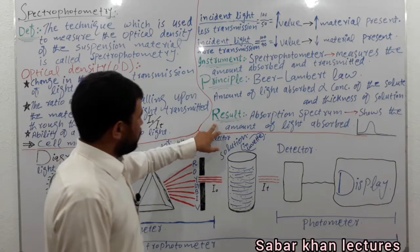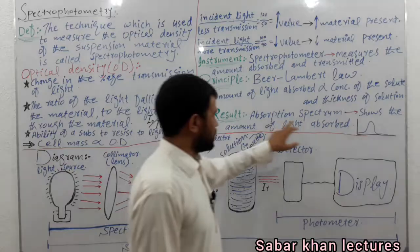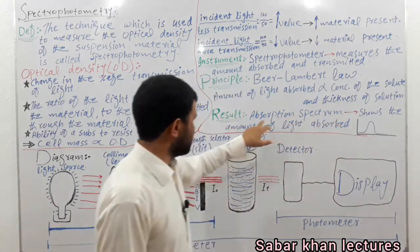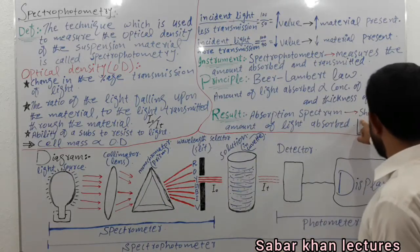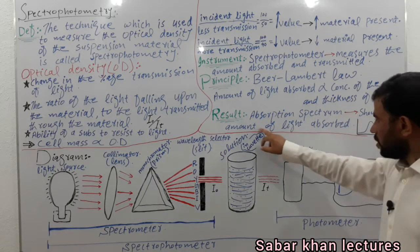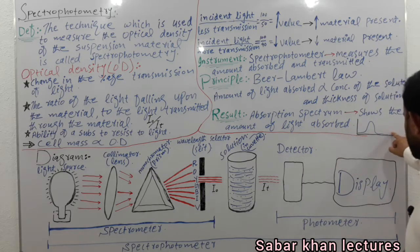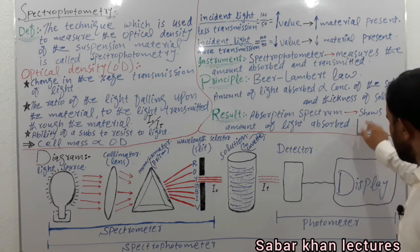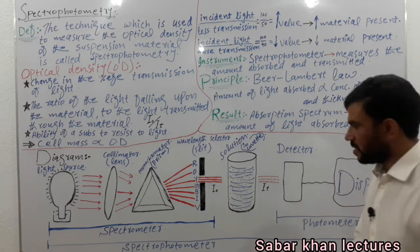Now we will come towards the result of spectrophotometry. An absorption spectrum is mostly the result of spectrophotometry. The absorption spectrum shows the amount of light absorbed — for example, at certain points more light is absorbed and at other points less light is absorbed.